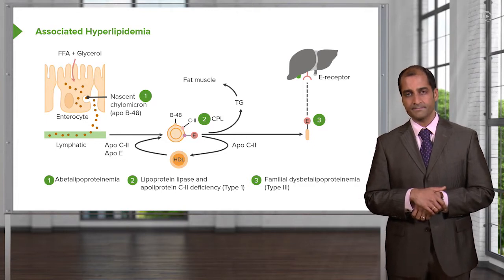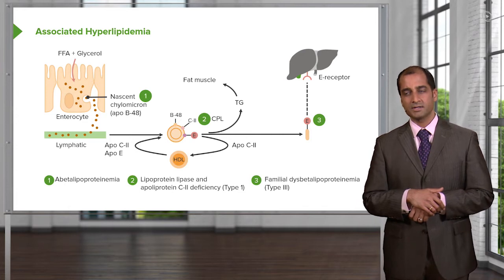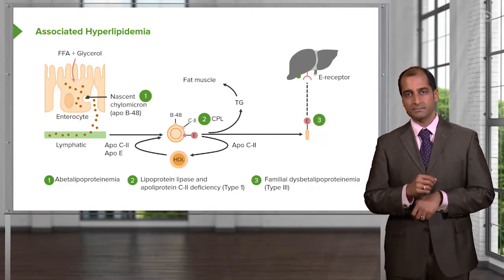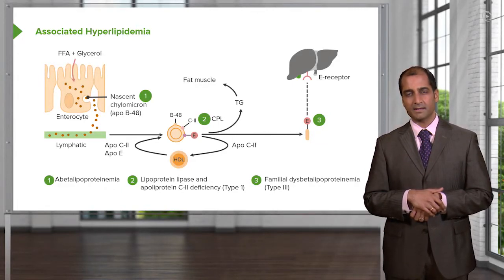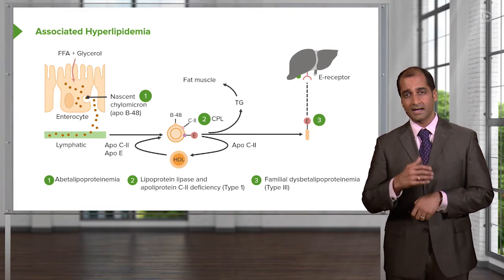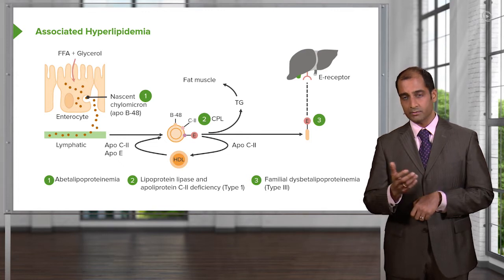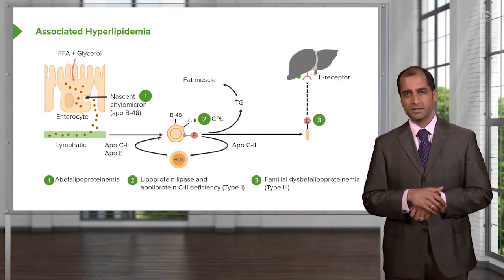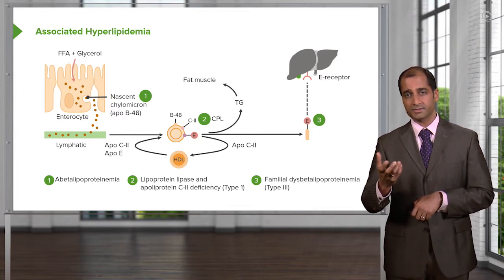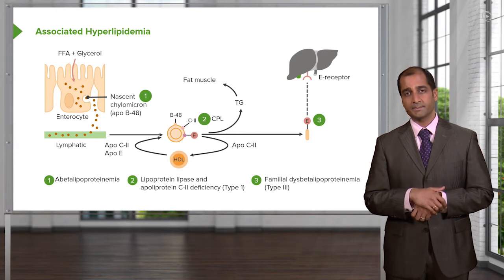Consider this: a patient has right upper quadrant pain postprandial — every time this patient has a meal there's right upper quadrant pain. What is happening? The hormone CCK is released by the I cell. The I cell releases CCK, which works on the gallbladder — the pathology might be called cholecystitis. That gallbladder contains bile. Why do you require that bile? Now we get into effective lipid digestion.